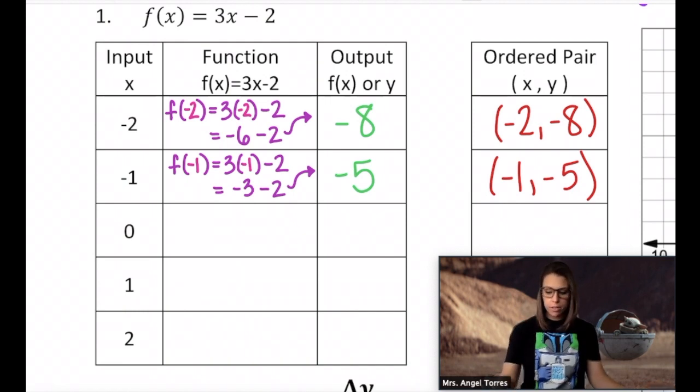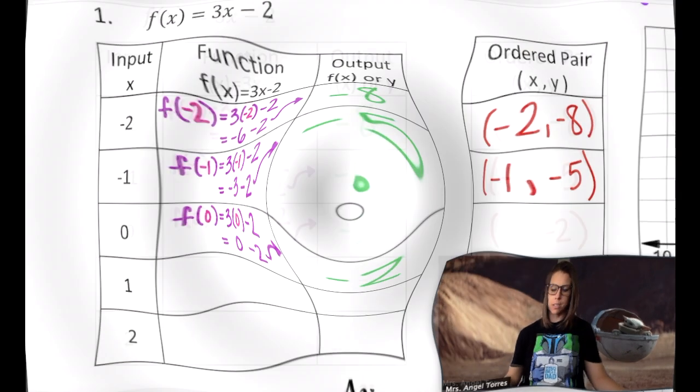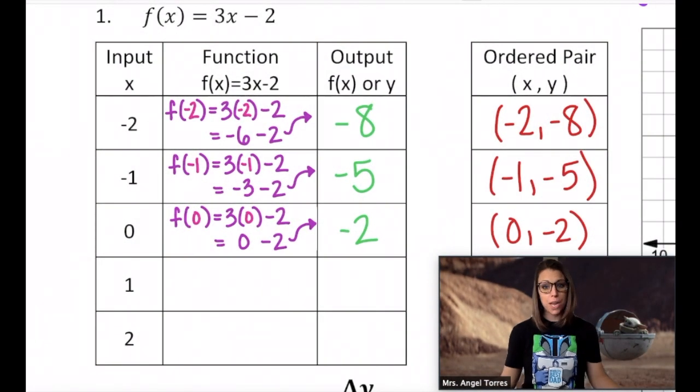What about 0? Well, using my function notation, that would be f(0) = 3 times 0 minus 2. 3 times 0 is 0. 0 minus 2 gives us an output of -2. So what would the ordered pair be here? You guessed it, (0, -2). Because when I inputted 0 into function f, I ended up with an output of -2. So why don't you go ahead and fill in the rest of the table and ordered pairs on your own.